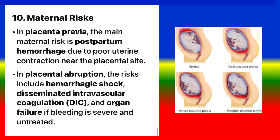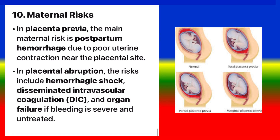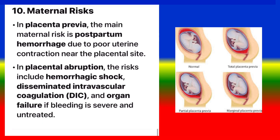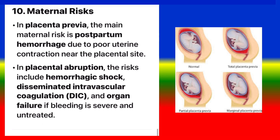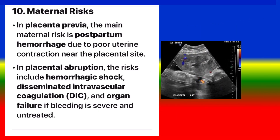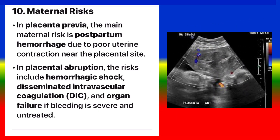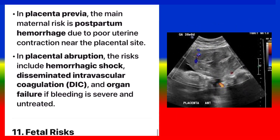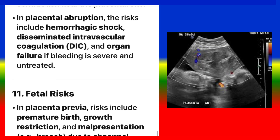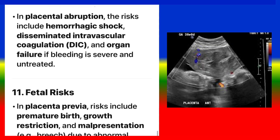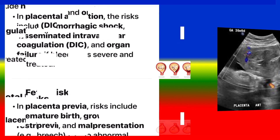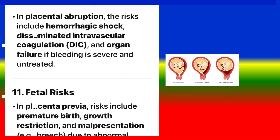Maternal risks. In placenta previa, the main maternal risk is postpartum hemorrhage due to poor uterine contraction near the placental site. In placental abruption, the risks include hemorrhagic shock, disseminated intravascular coagulation, and organ failure if bleeding is severe and untreated.